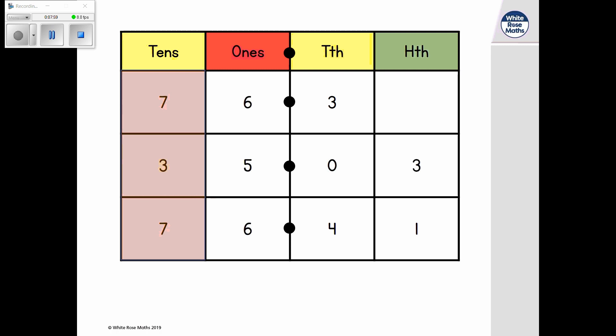The other numbers both have seven tens. So we need to look at the next column to the right. This is the ones. There are the same number of ones in 76.3 and 76.41. So we need to look at the number of tenths.